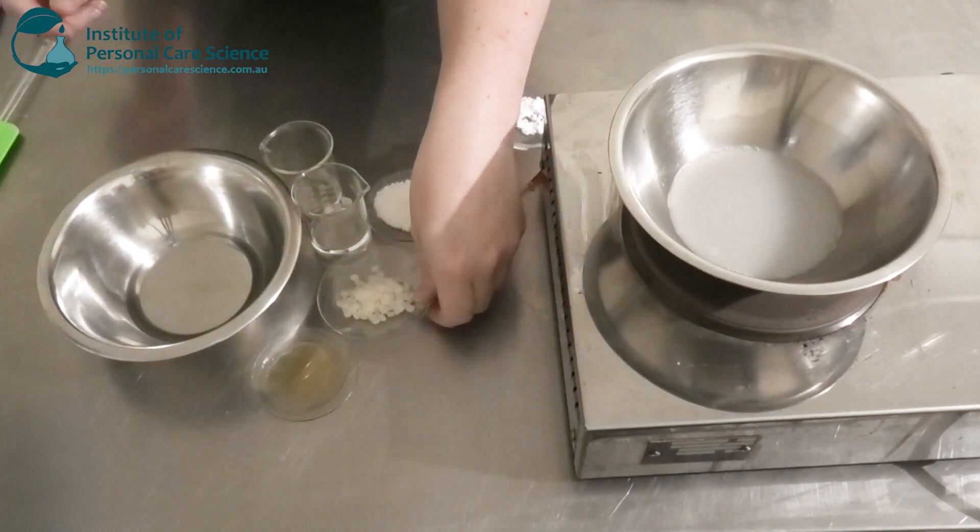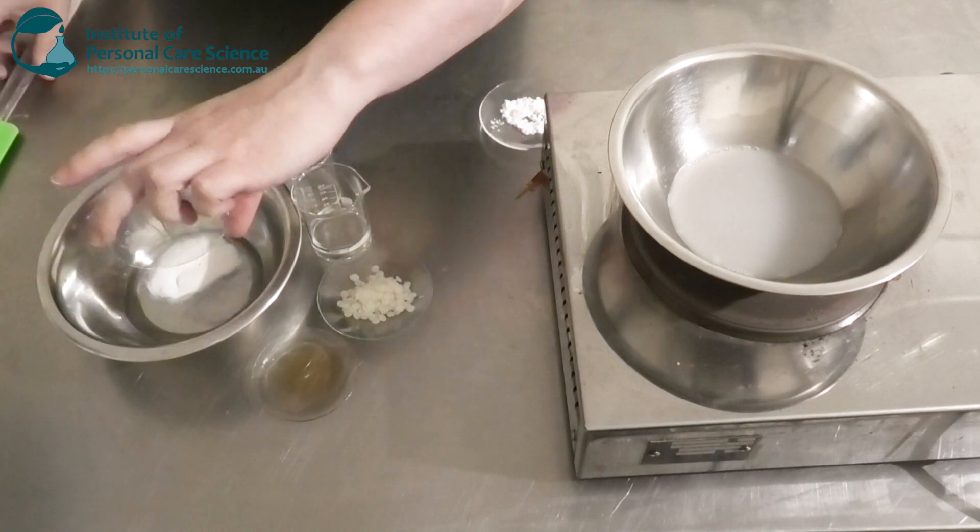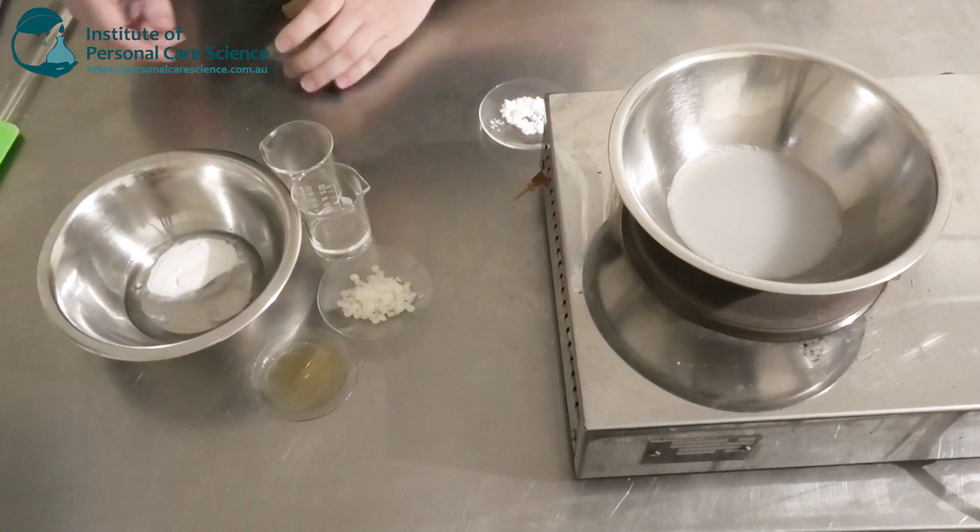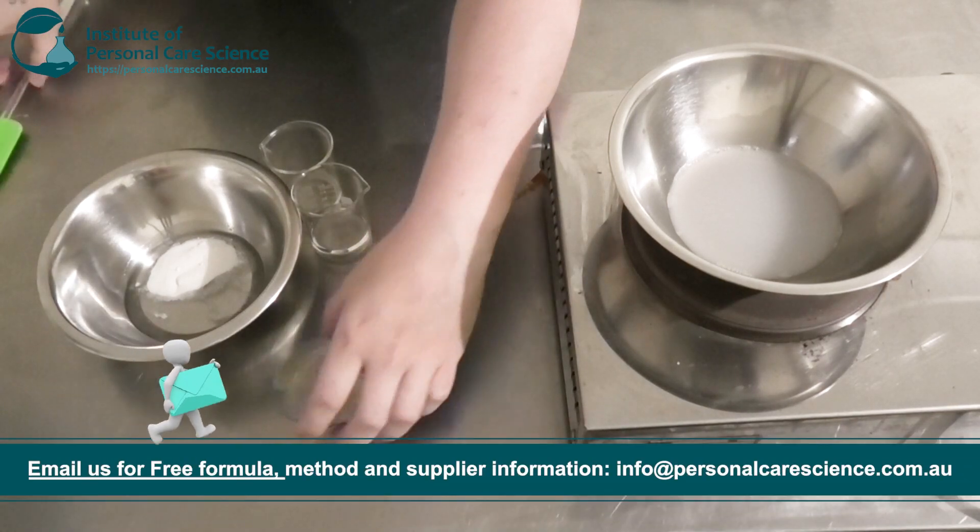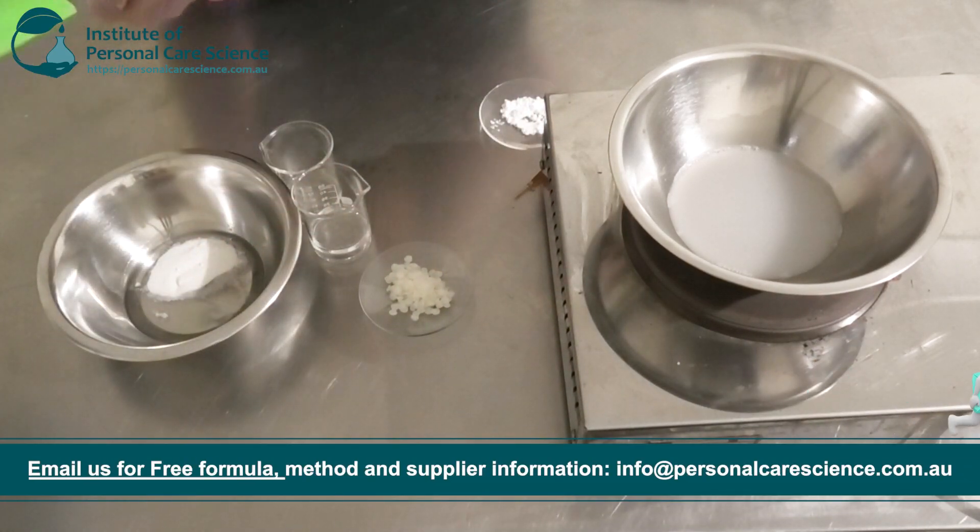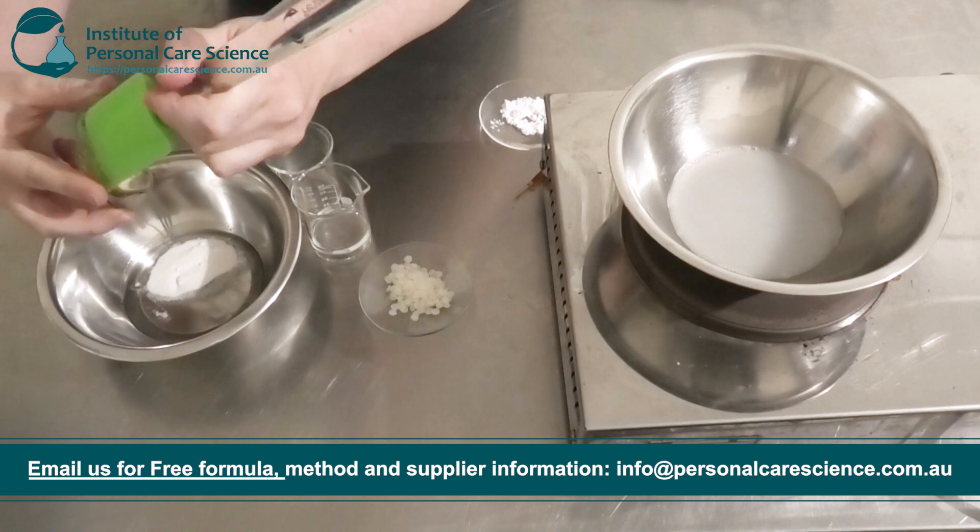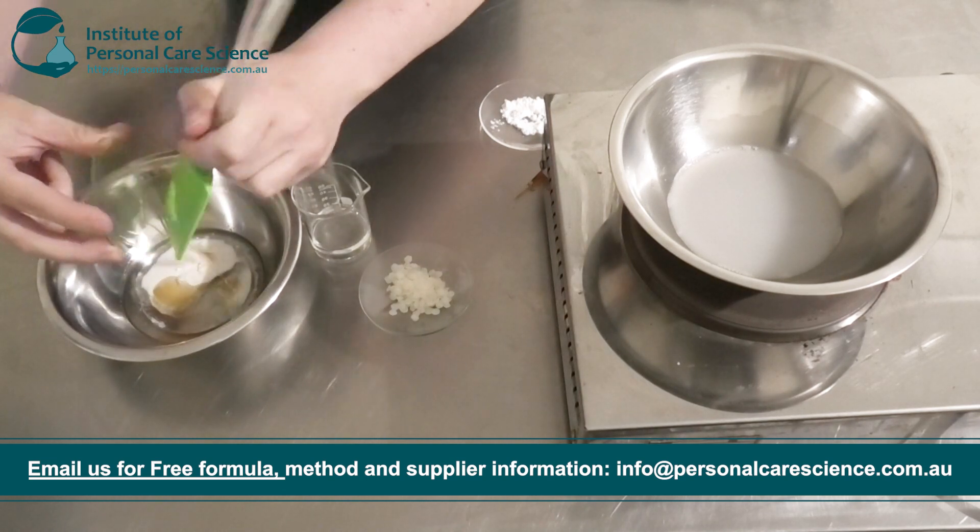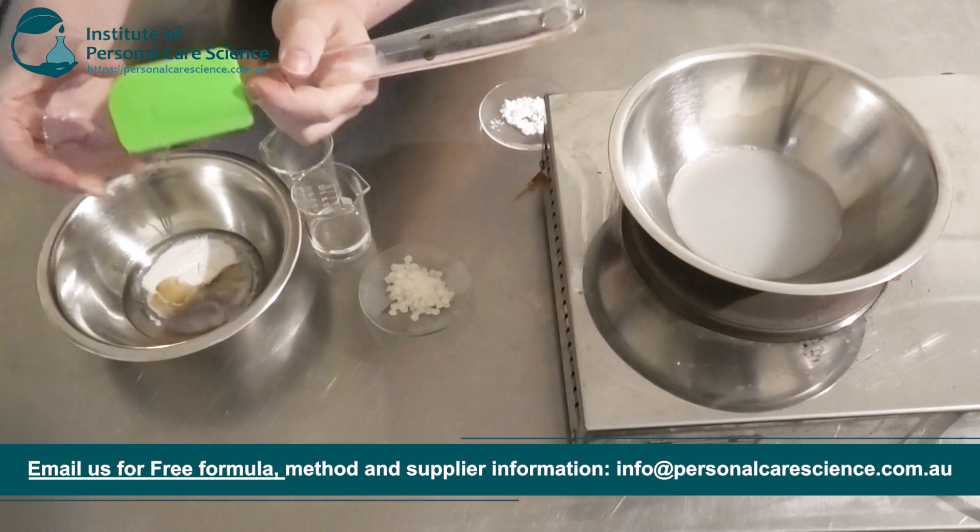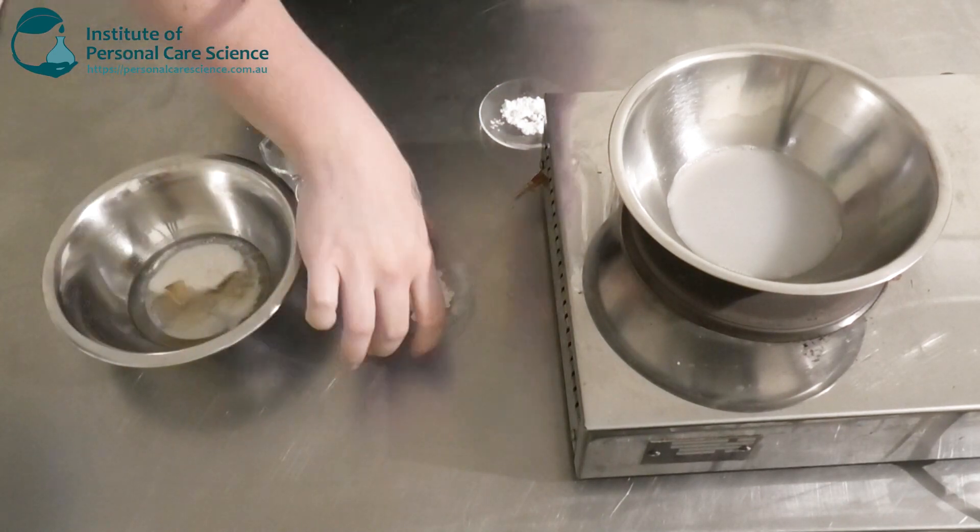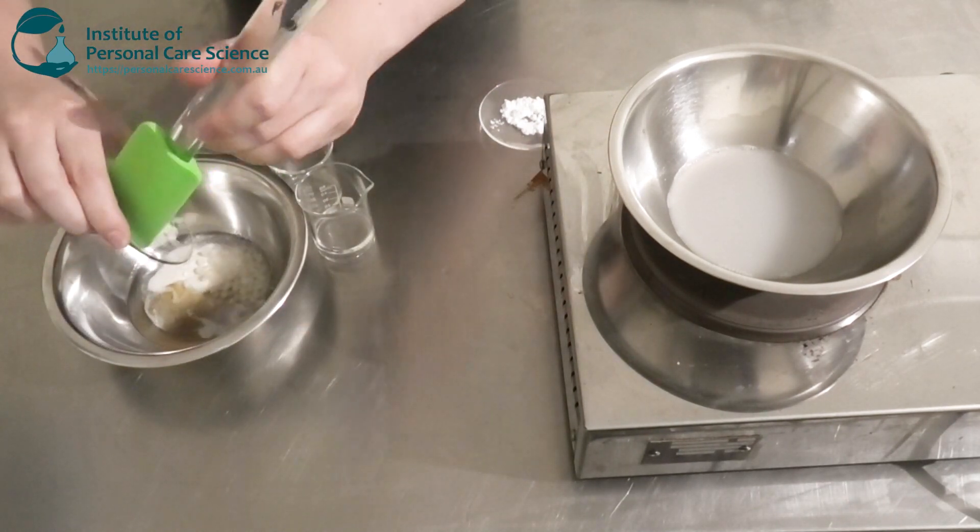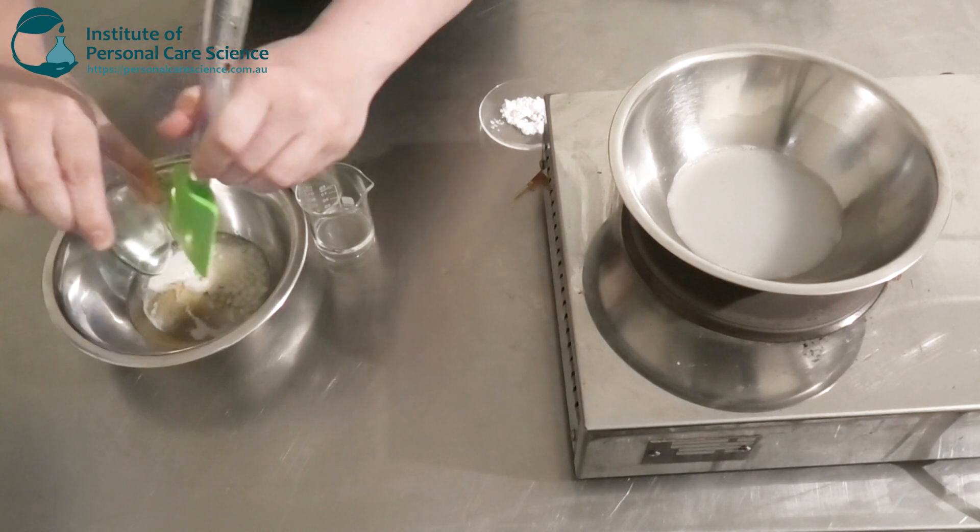Next I'm going to combine my oil phase. So I'm going to use some glycerol stearate as one of my emulsifiers. I'm also going to use some Arlacel 1690 as my other emulsifier just to make sure it's nice and stable. And I'm also going to add a bit of beeswax for some extra viscosity.